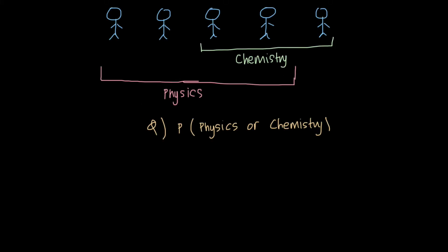Hi everybody. Today we'll be looking at mutually exclusive and non-mutually exclusive events. Let's begin by looking at a question. Here I have five students in a class. Three of them take chemistry and four of them take physics. The question is asking us to find the probability of taking either physics or chemistry.